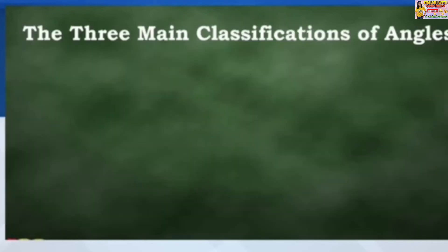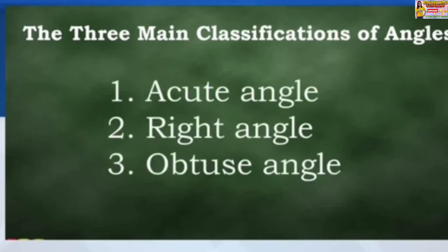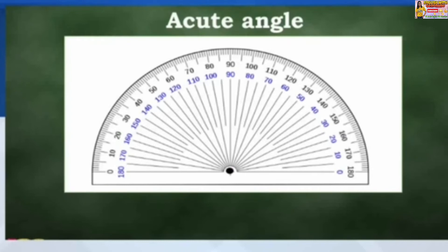And what are the three main classifications of angles? We have acute angle, right angle, and obtuse angle. And what is an acute angle? An acute angle is an angle that measures less than 90 degrees.